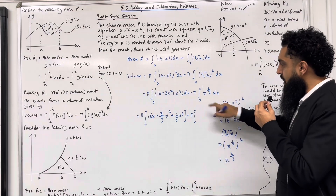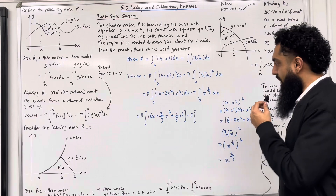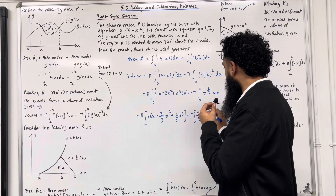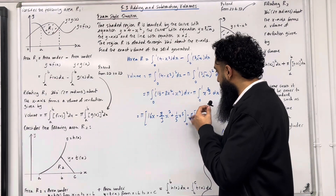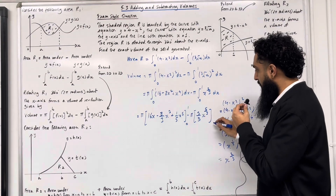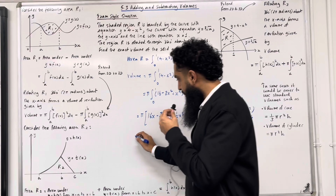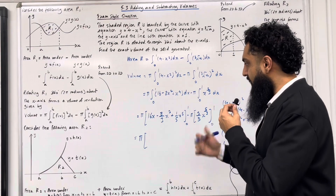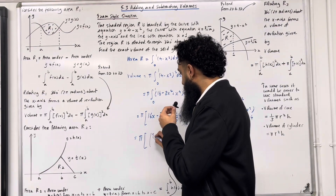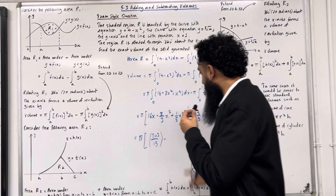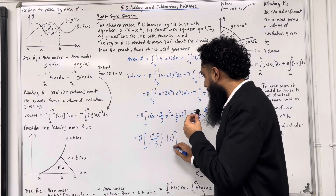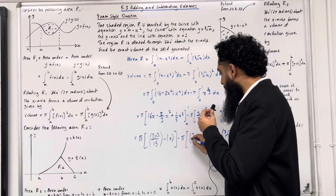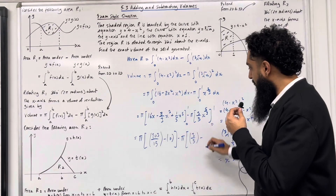For the second integral, (2/3) + 1 divided by the new power gives (3/5)x^(5/3). The limits for both square brackets are 0 to 1. Substituting x = 1 into the first expression gives 203/15, and substituting x = 0 gives 0. Then minus π multiplied by: substituting x = 1 gives 3/5, and substituting x = 0 gives 0.